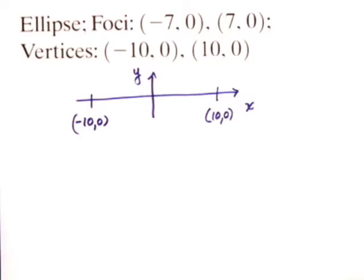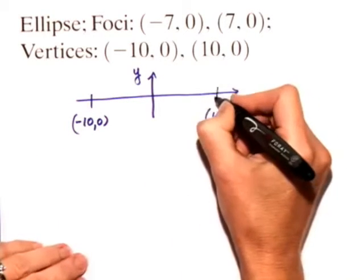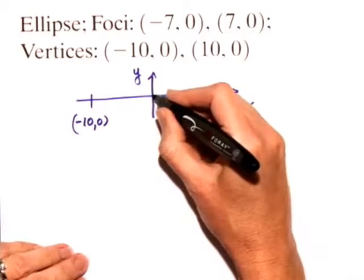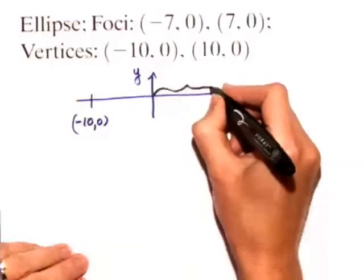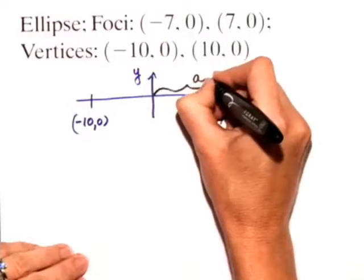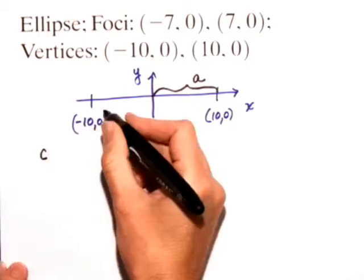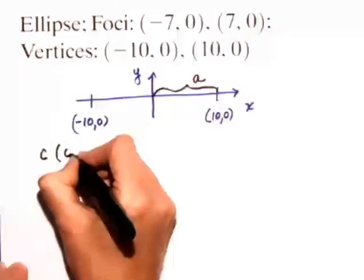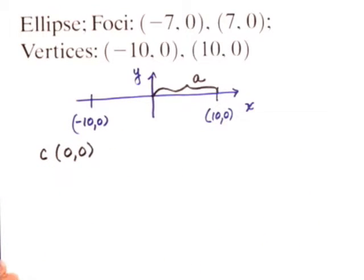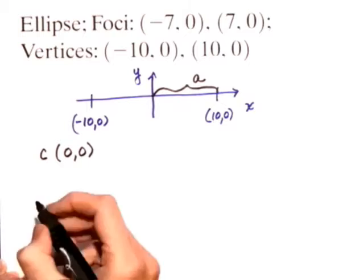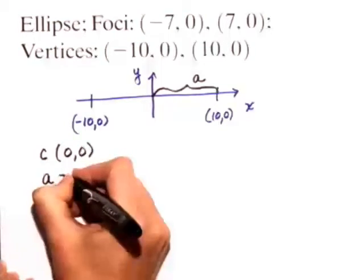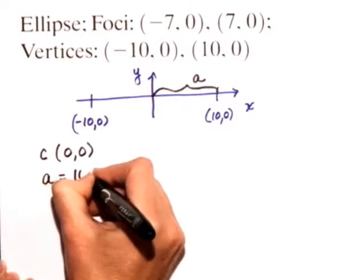Remember, whenever you have a vertex, you know that it is exactly a units from the center. We can see that our center is halfway in between each vertex, so the center will be at (0, 0). And we can also see that a, in this case, is equal to 10.